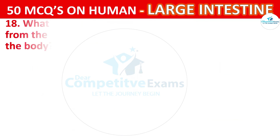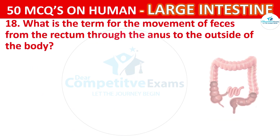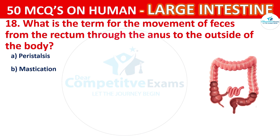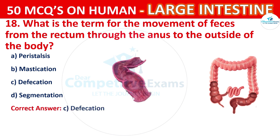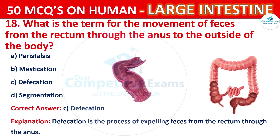Question number 18. What is the term for the movement of feces from the rectum through the anus to the outside of the body? The correct answer is C, that is Defecation. Defecation is the process of expelling feces from the rectum through the anus.